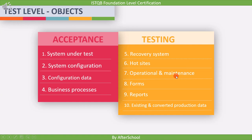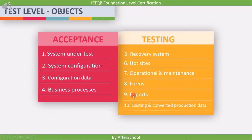Next is operational and maintenance processes, which describe how the software shall be used or maintained. Next are forms and reports. The last test object is existing and converted production data — all data collected during production are used as test objects for acceptance testing. So the test objects of acceptance testing are: system under test, system configuration and configuration data, business processes for a fully integrated system, recovery systems and hot sites for business continuity and disaster recovery testing, operational and maintenance processes, forms, reports, and existing and converted production data.